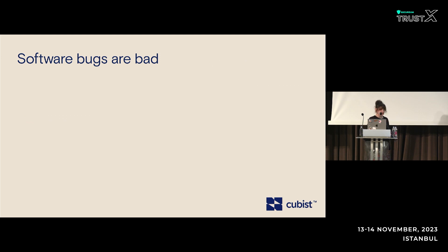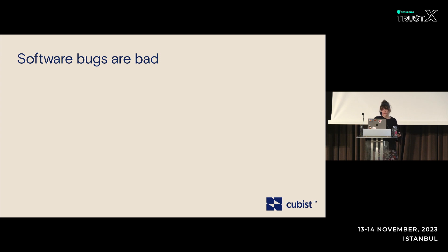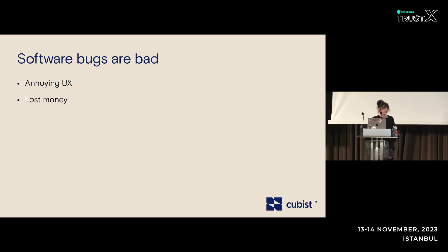I'm going to start with the really obvious, which is that software bugs are bad and we all hate them. They're really annoying — it sucks when your browser crashes, it sucks when you have to restart your phone. In the DeFi world, bugs can translate directly to lost funds. We've seen all sorts of smart contract and bridge hacks that have cost millions of dollars.